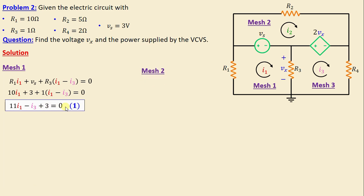Moving on to mesh two, applying Kirchhoff's voltage law: negative Vs plus R2 times i2 minus 2 vx is equal to zero.